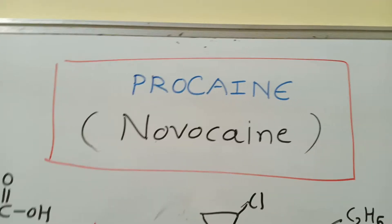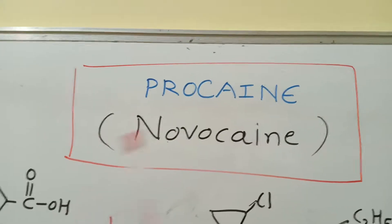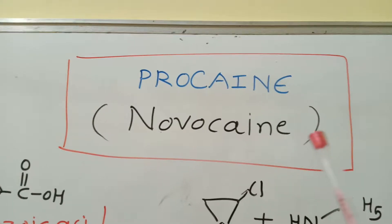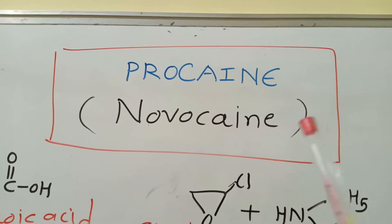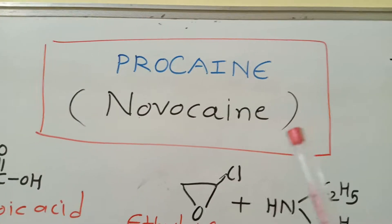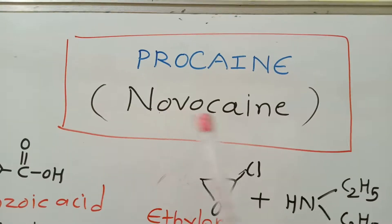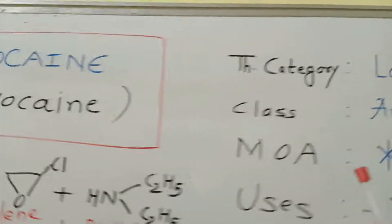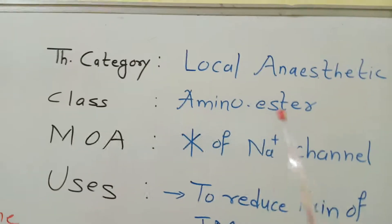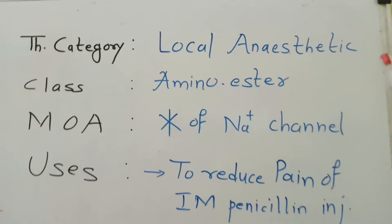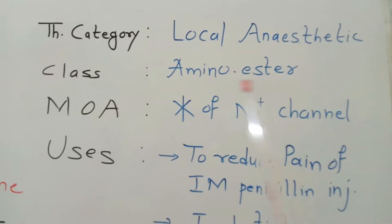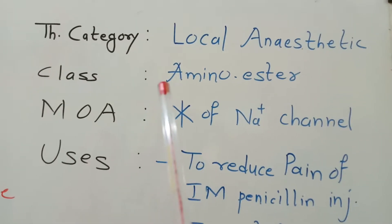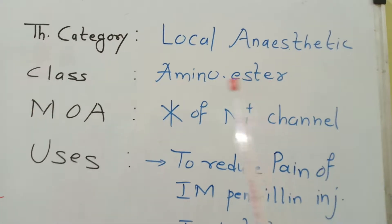Hello friends, today we are going to describe procaine, which is generally called Novocaine. This drug belongs to the therapeutic category of local anesthetic agents. The chemical class to which it belongs is the amino-ester type.